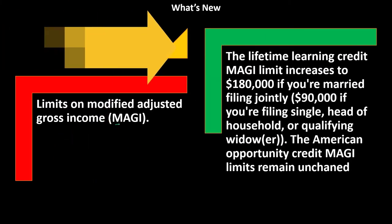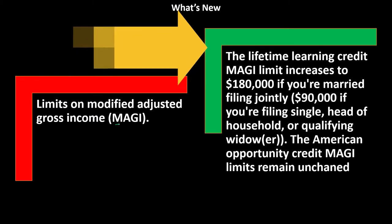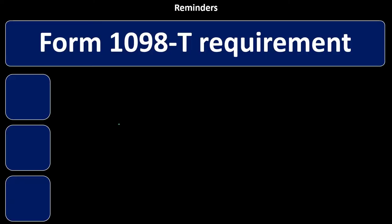The Lifetime Learning Credit MAGI limit increases to $180,000 if married filing jointly, or $90,000 if filing single, head of household, or qualifying widow/widower. The American Opportunity Credit MAGI limit remains unchanged.